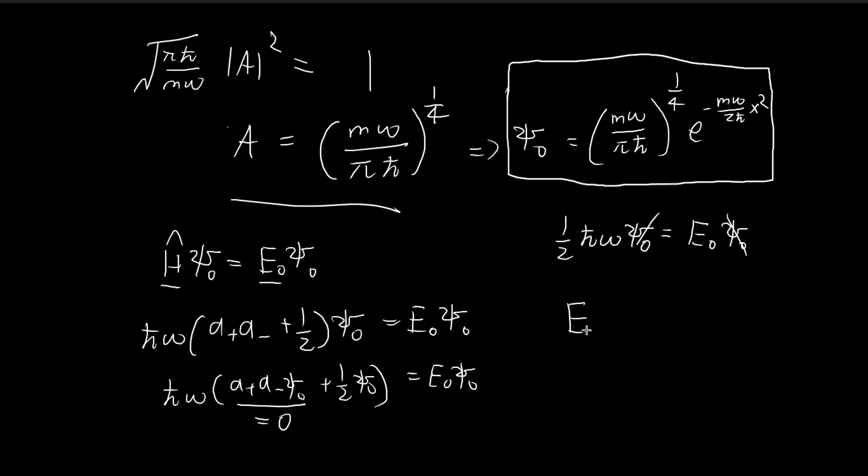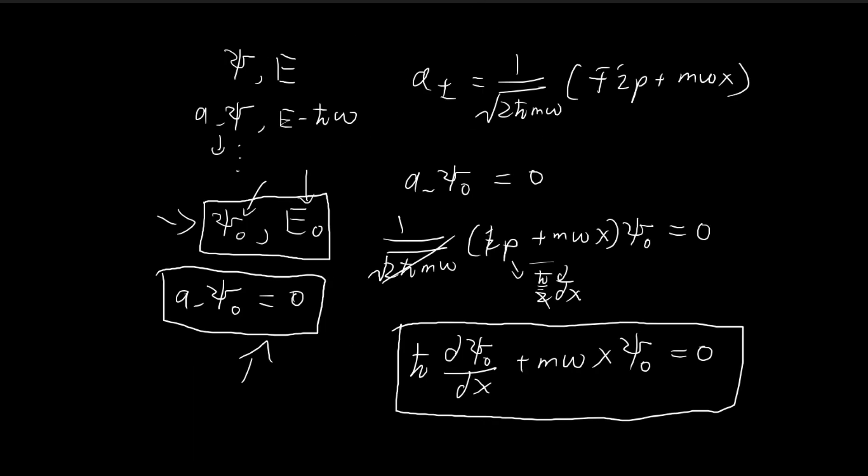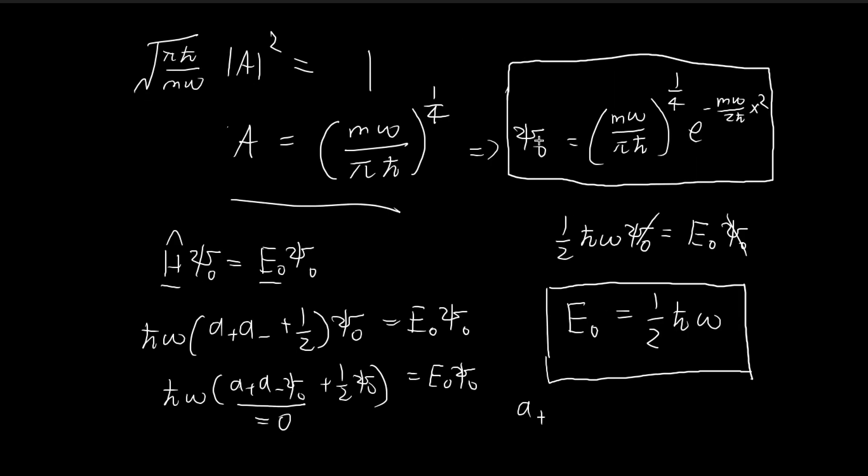Now all we're left with is ½ℏω ψ₀ = E₀ψ₀. Just canceling this out, we see that the energy level corresponding to ψ₀ equals ½ℏω. We've arrived at a very important solution. We found one of the solutions and its corresponding energy level. Thanks to the positive operator A⁺, each time we apply this to a solution, we get a new solution with a higher energy level. Once we've found ψ₀, we can keep applying A⁺ to get all the other solutions.